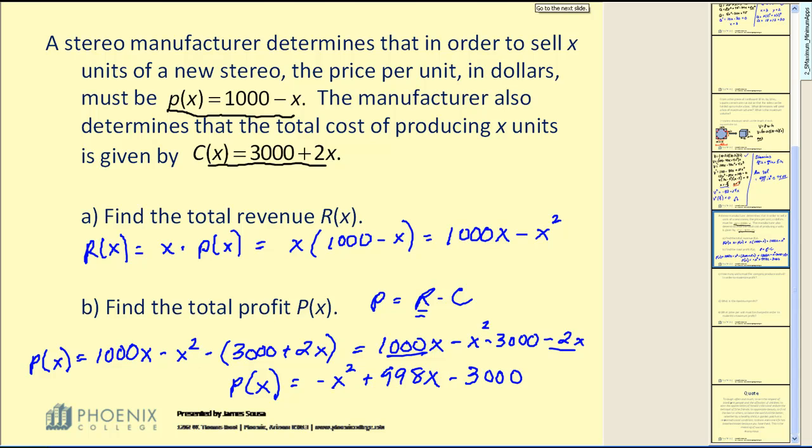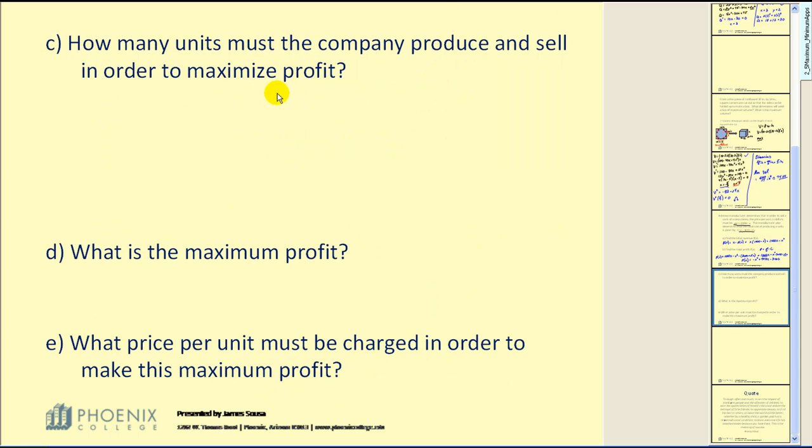Let's take a look at part C. How many units must the company produce and sell in order to maximize profit? Revisiting our profit function from part B, we have negative x squared plus 998x minus 3000. Again, in order to find the maximum profit, we need to find the first derivative, set it equal to zero to find the critical numbers.